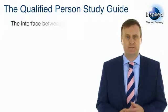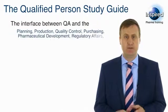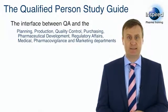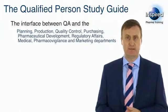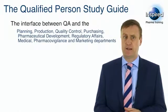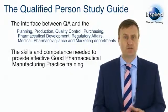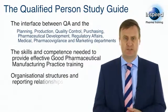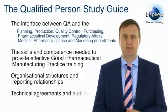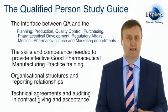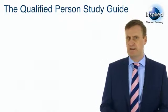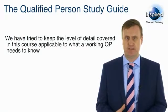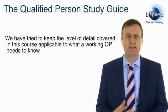We will also cover the interface between QA and the planning, production, quality control, purchasing, pharmaceutical development, regulatory affairs, medical, pharmacovigilance and marketing departments. We will include the skills and competence needed to provide effective good pharmaceutical manufacturing practice training. We will cover organisational structures and reporting relationships, as well as technical agreements and auditing in contract giving and acceptance. All of the study guide's requirements are covered in this whole module.